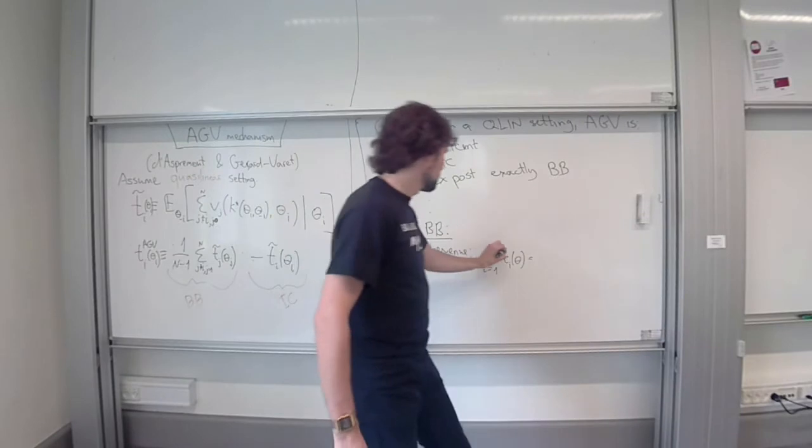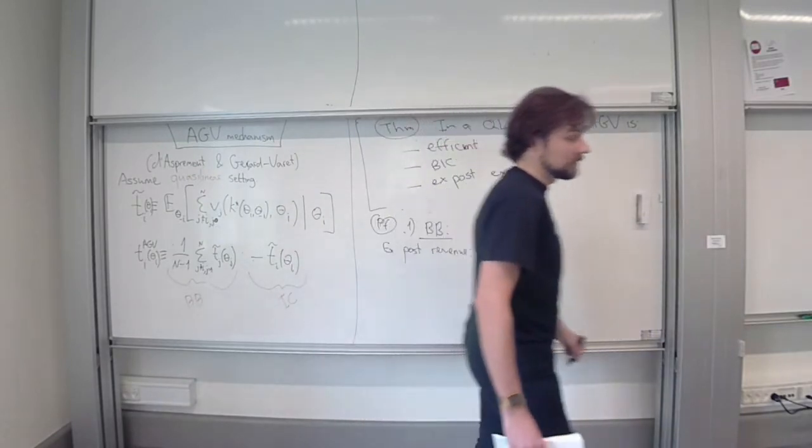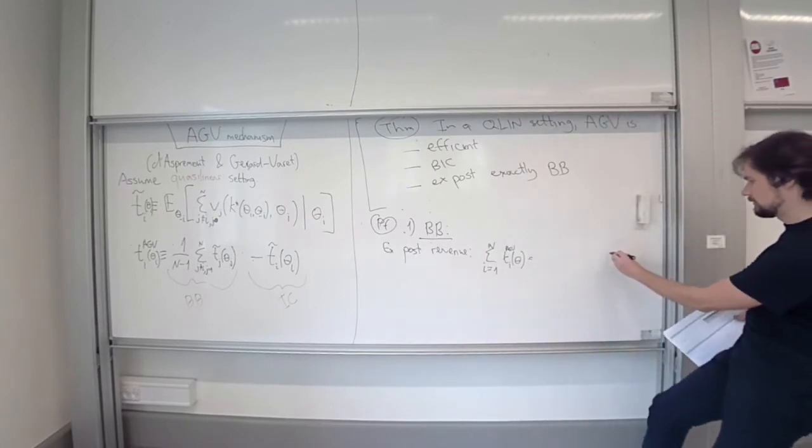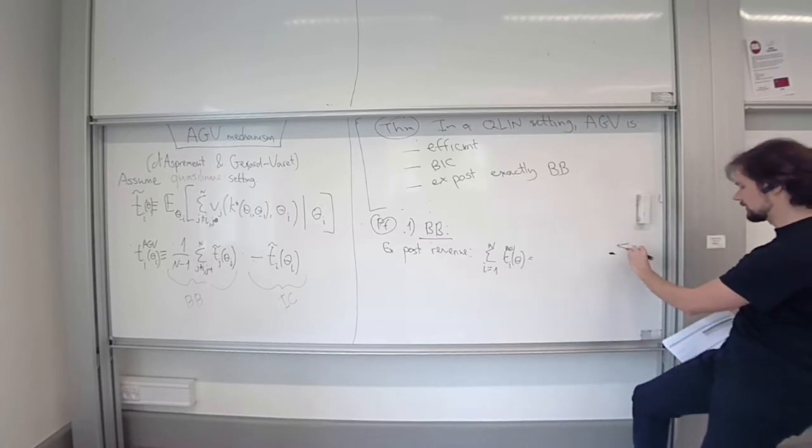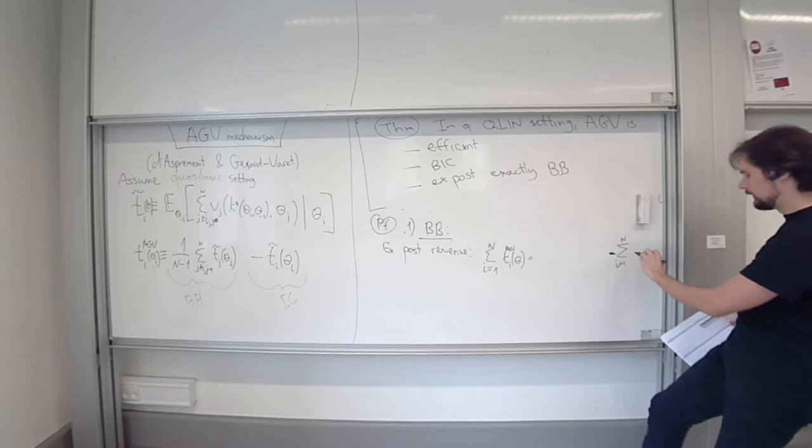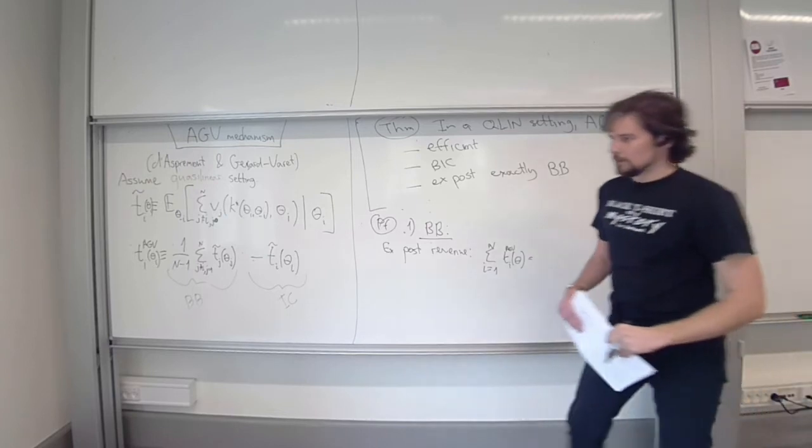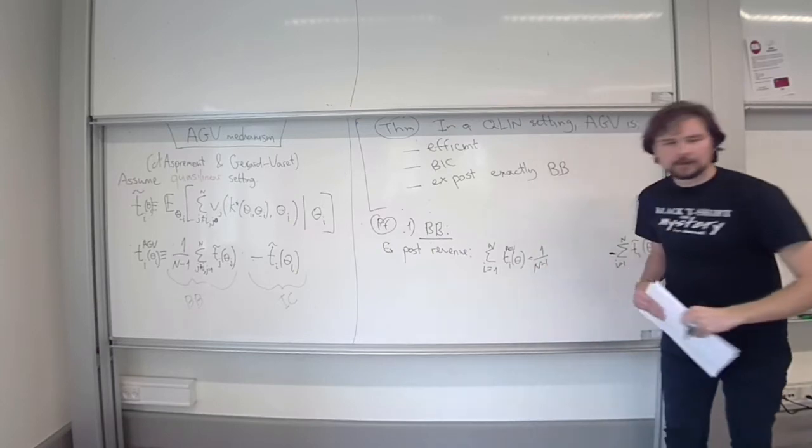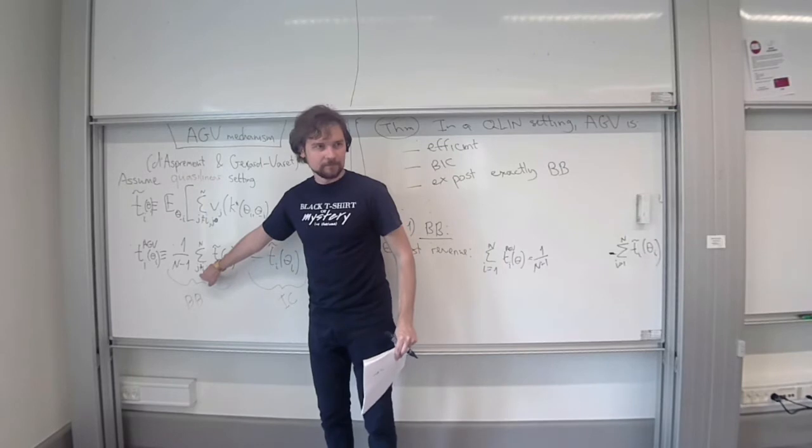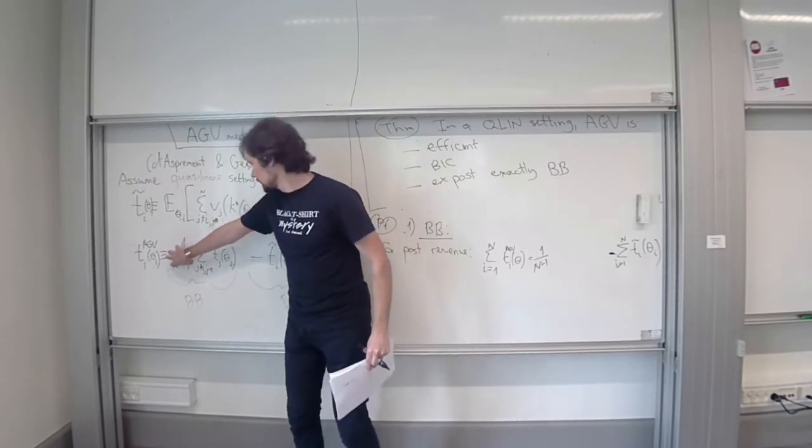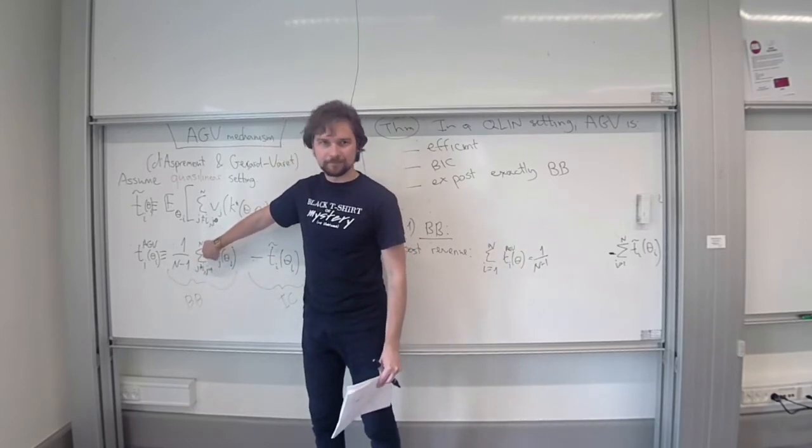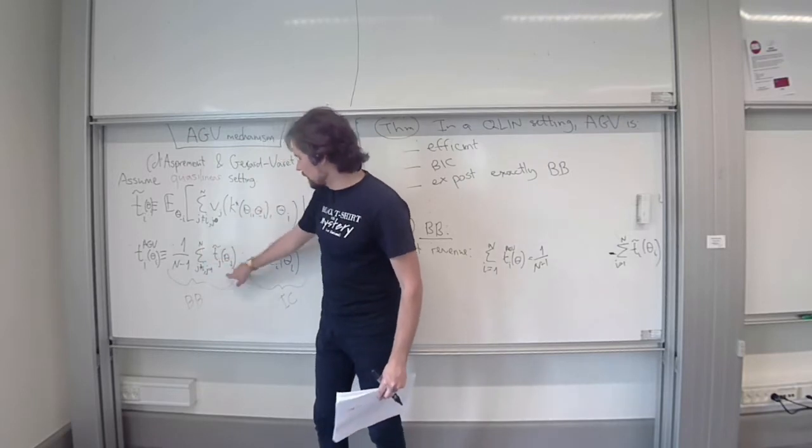So expected revenue is given by the sum over i from 1 to n of T_i of theta. And in our mechanism, the sum of these AGV transfers is given by what? So we can easily sum the latter parts. We will have just one sum over i from 1 to n of T_i tildes theta_i. But this first part is a little bit annoying. So 1 over n minus 1 is fine. But then we have a sum of sums. So we sum over all players i. And the summands are the sums over all players except for i. So let's just try to count how many of each T_j will be in this.